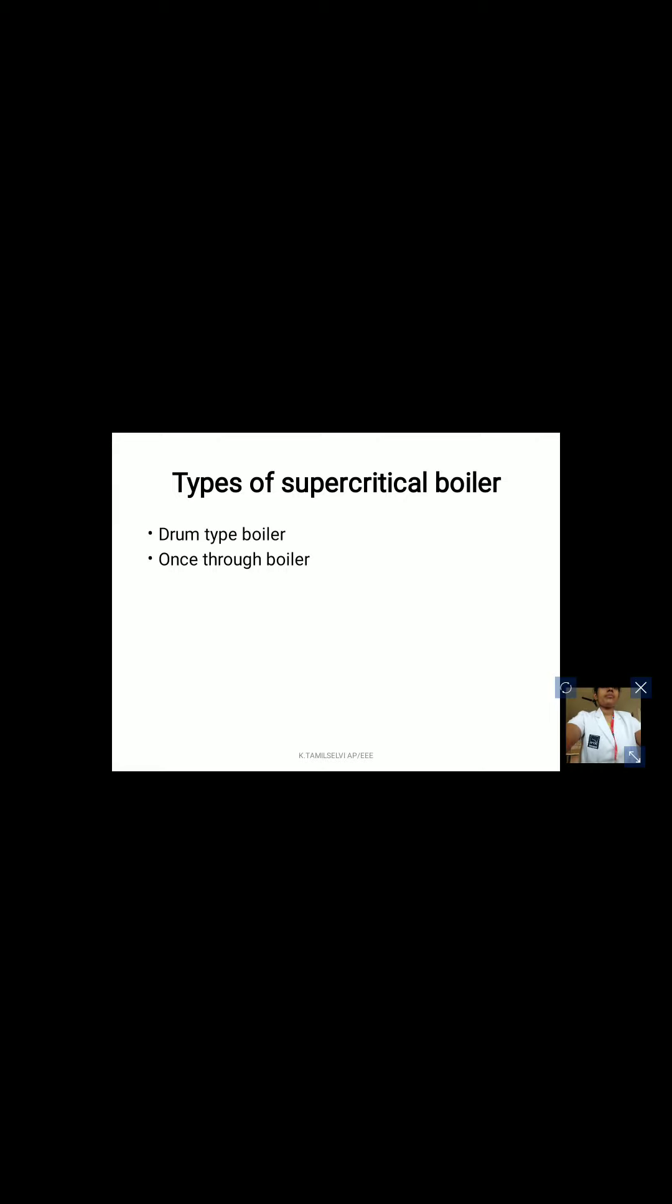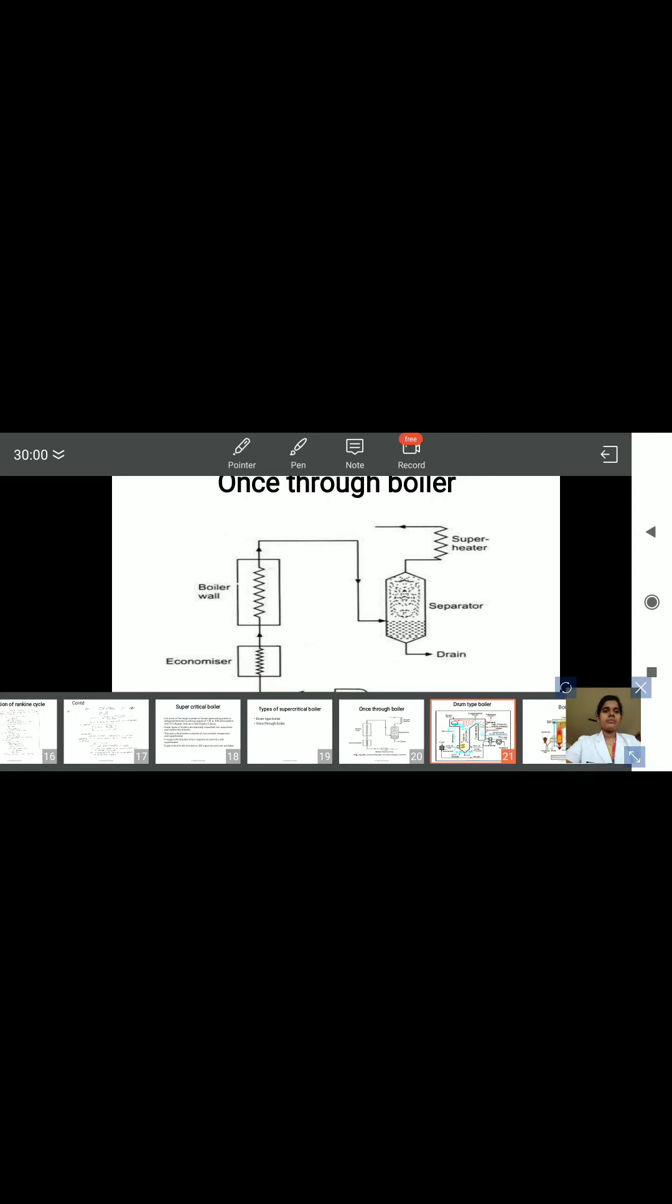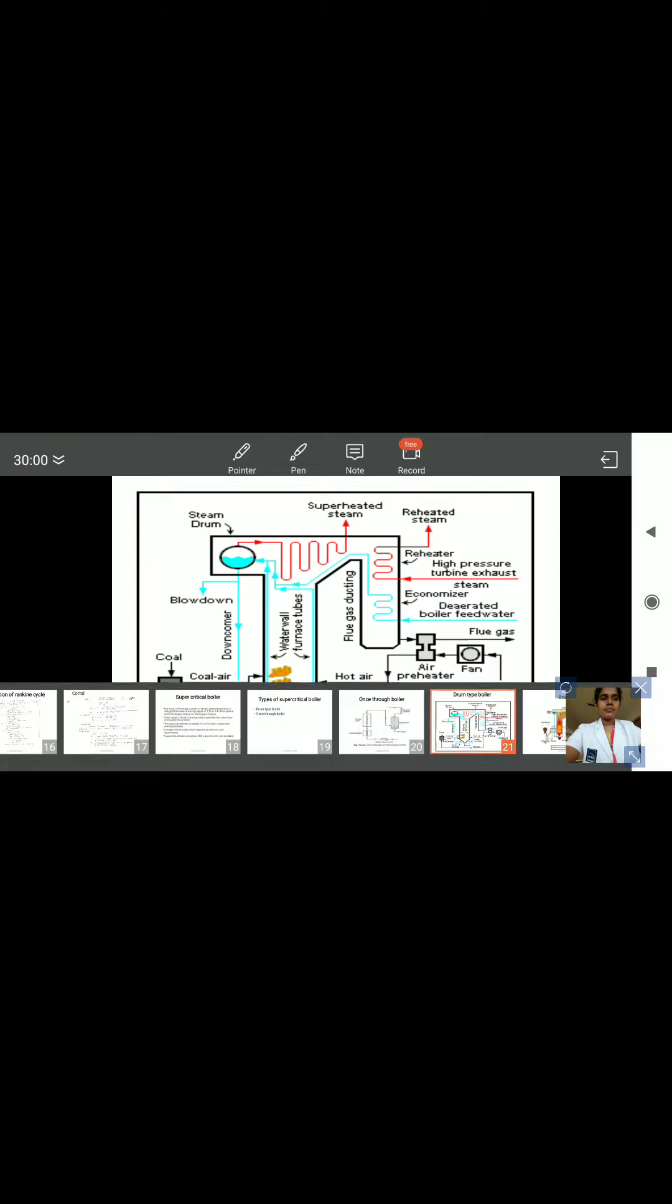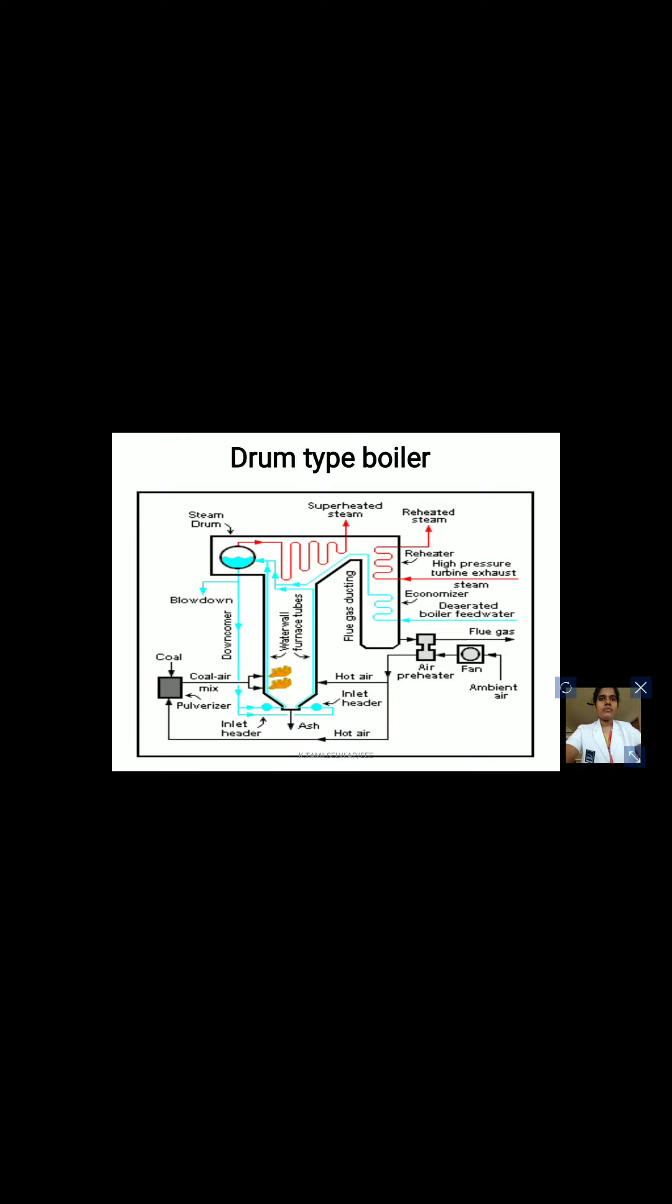Generally, there are two types of supercritical boilers. The first type is drum type boiler and the second one is once through boilers. In the drum type boiler, a steam drum is a standard part of the water tube boiler. It is a reservoir of water or steam at the top end of water tubes. The drum stores the steam generated in the water tubes.